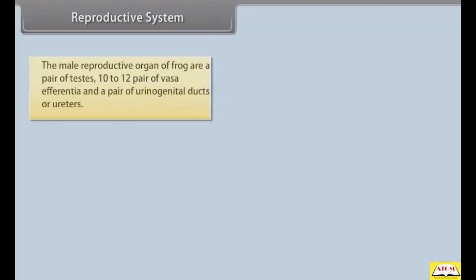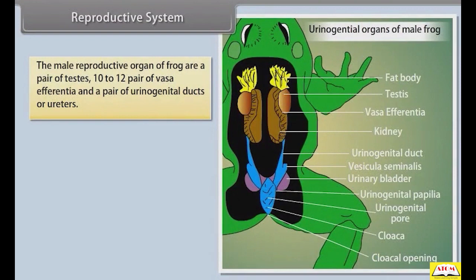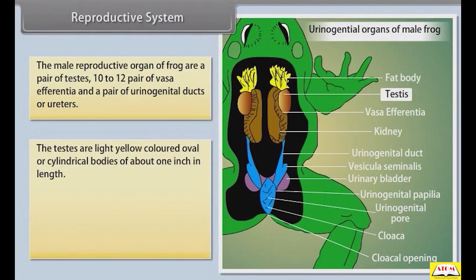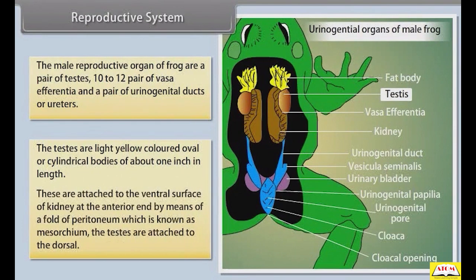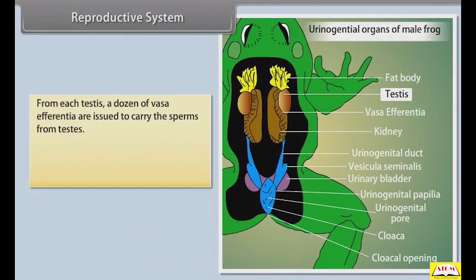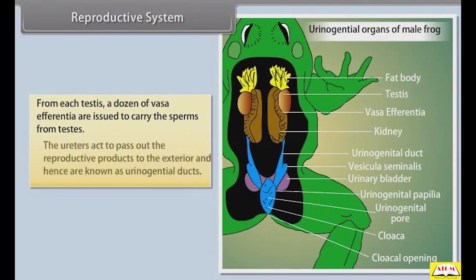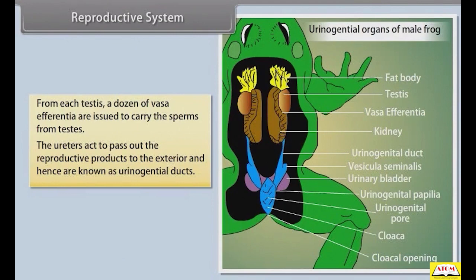The male reproductive organs of frog are a pair of testes, 10 to 12 pairs of vasa efferentia, and a pair of urinogenital ducts or ureters. The testes are light yellow-colored, oval or cylindrical bodies about one inch in length, attached to the ventral surface of the kidney at the anterior end by a fold of peritoneum known as the mesorchium. From each testis, a dozen vasa efferentia are issued to carry sperm from the testes. The ureters act to pass out reproductive products to the exterior and are hence known as urinogenital ducts.